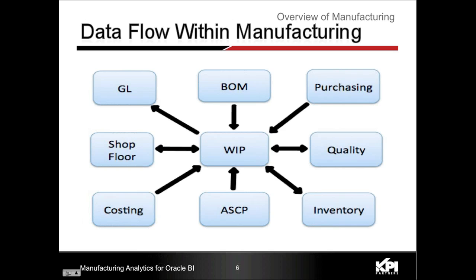Costing is another important module because it tells you what the different costs are that are tied to the manufacturing process. For example, to manufacture one desktop, my company is spending about $200. Can I break down this $200 by how much was spent on material, how much on resource, and what was the cost on overhead? This level of breakdown really helps understand the expenditure breakdown by cost elements in my company.